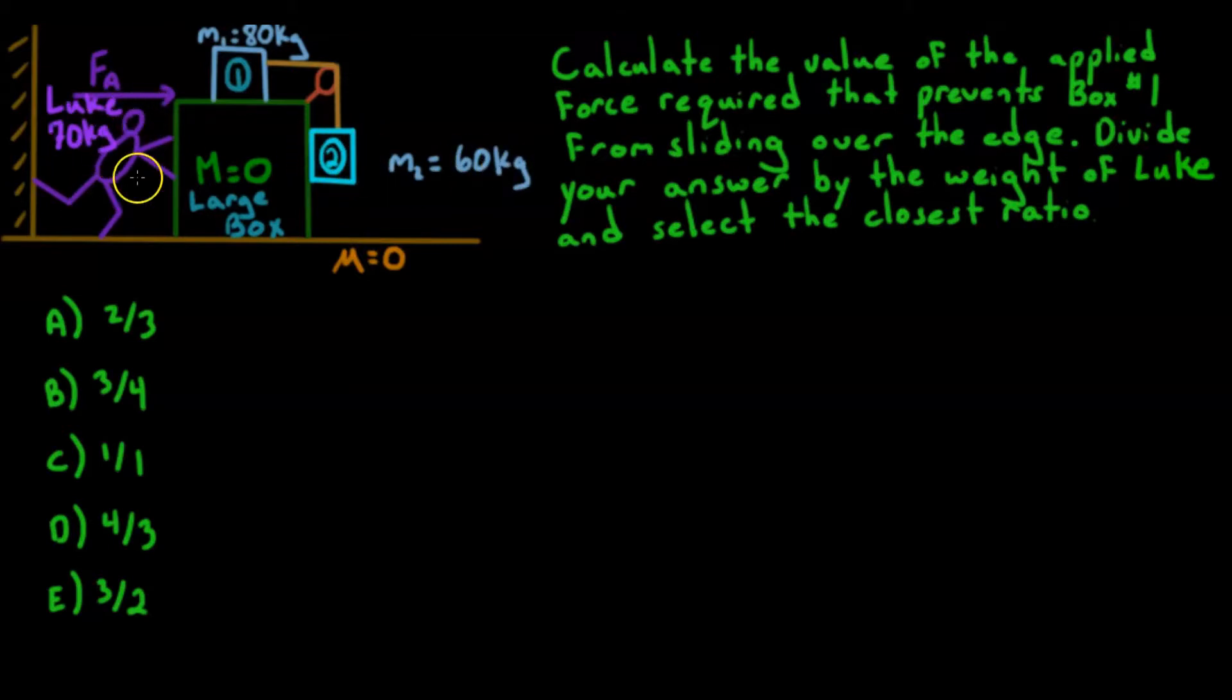Then over here we have a person, let's call him Luke, and he has a mass of 70 kilograms. And Luke's applying a force on this large box. Now the question says, calculate the value of that applied force required that prevents box 1 from sliding over the edge. And then divide your answer by the weight of Luke and select the closest ratio.